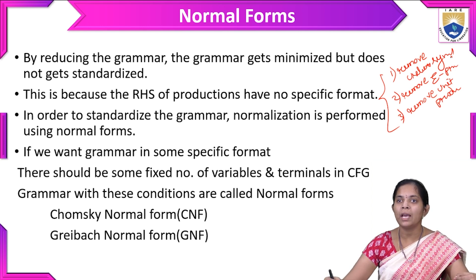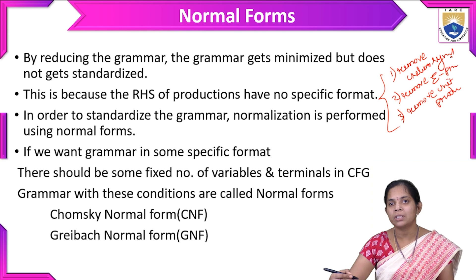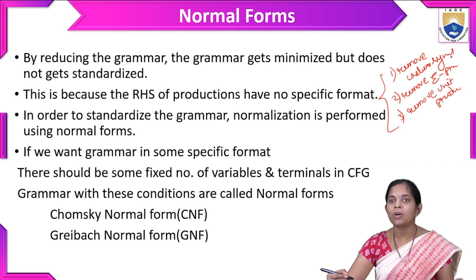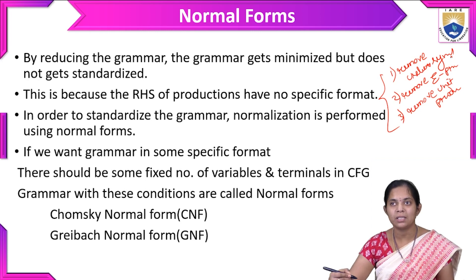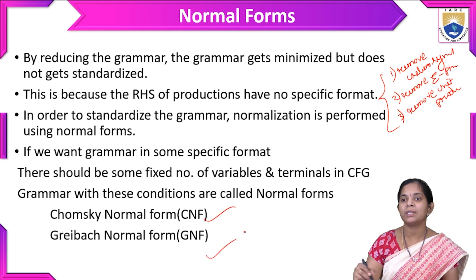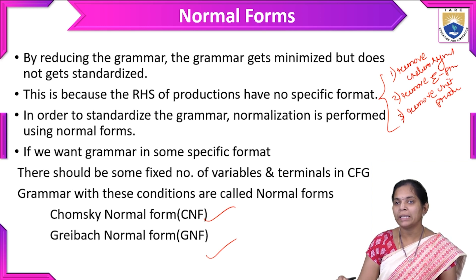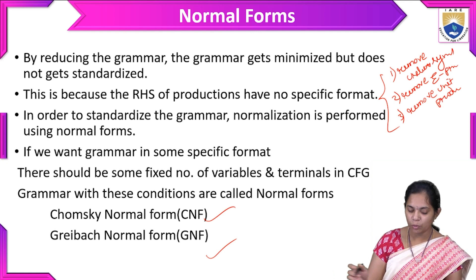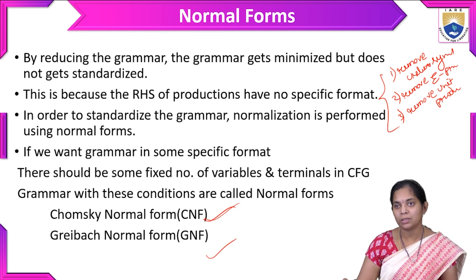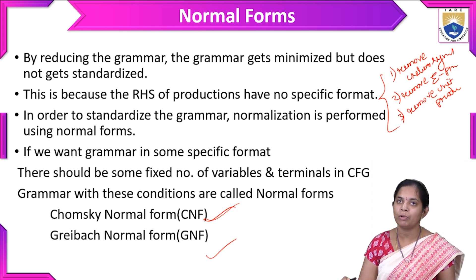Removing useless symbols, unit productions, and epsilon symbols is not a standardized way. To standardize, we have to include normal forms, because the right-hand side of the productions has no specific format. After minimizing the context-free grammar, we do not have a specific format. To maintain a specific standardization in the grammar, we have two types of normal forms: one is Chomsky Normal Form and the second one is Greibach Normal Form.